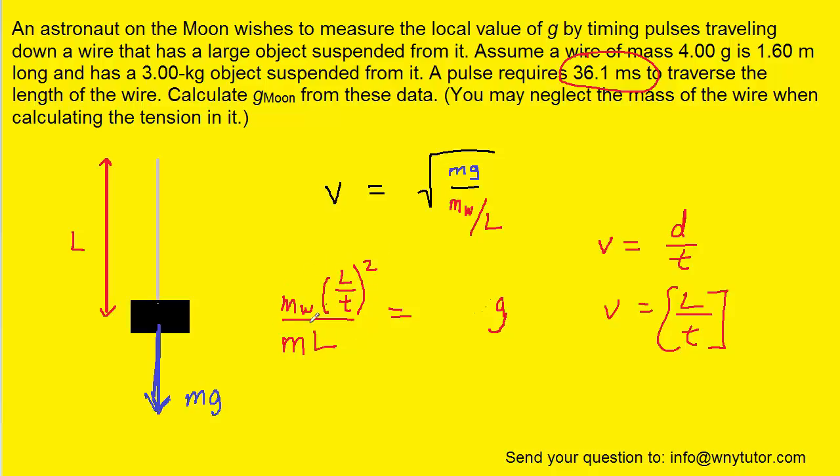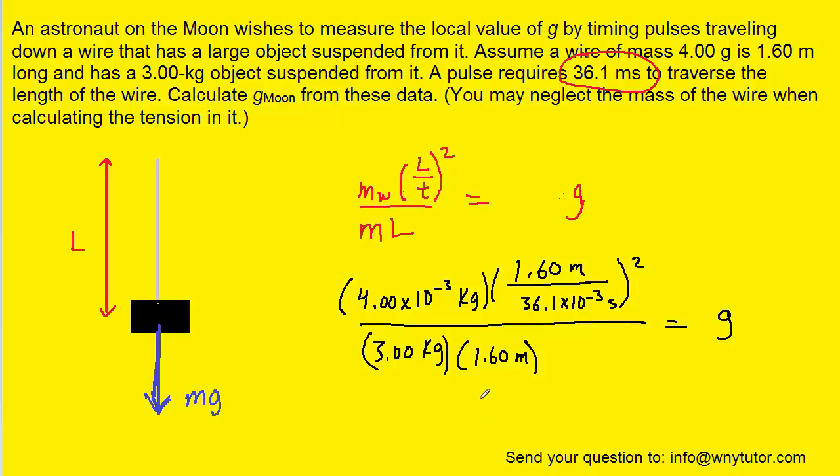Note that the L over t is still squared since we have the speed v squared. Now we're ready to plug in all the known values. Again, we have the mass of the wire, the mass of the block, the length of the string, and the time it takes for the pulse to travel down the length of the string. And when you process all of that on your calculator, you should get approximately 1.65 meters per second squared for the value of g.